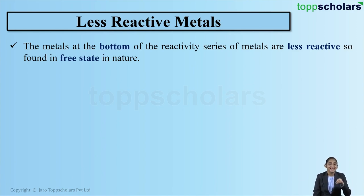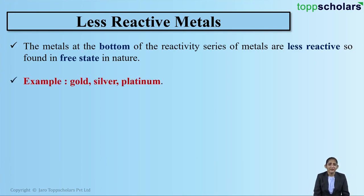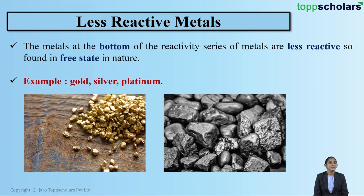Since these metals are less reactive, they are always found in the free state in nature, because these less reactive metals do not easily react with other elements. For example, gold, silver, and platinum. These metals are present at the bottom of the reactivity series and so they are said to be less reactive. Being less reactive, they are found in the free state in nature.